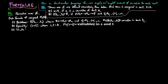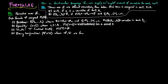Three, truth: we use a symbol T called truth, and there are no free variables of T. Four, binary conjunction: the binary conjunction of phi and psi, where phi and psi are formulae, and the free variables of the conjunction of phi and psi is the union of the free variables of phi and the free variables of psi.